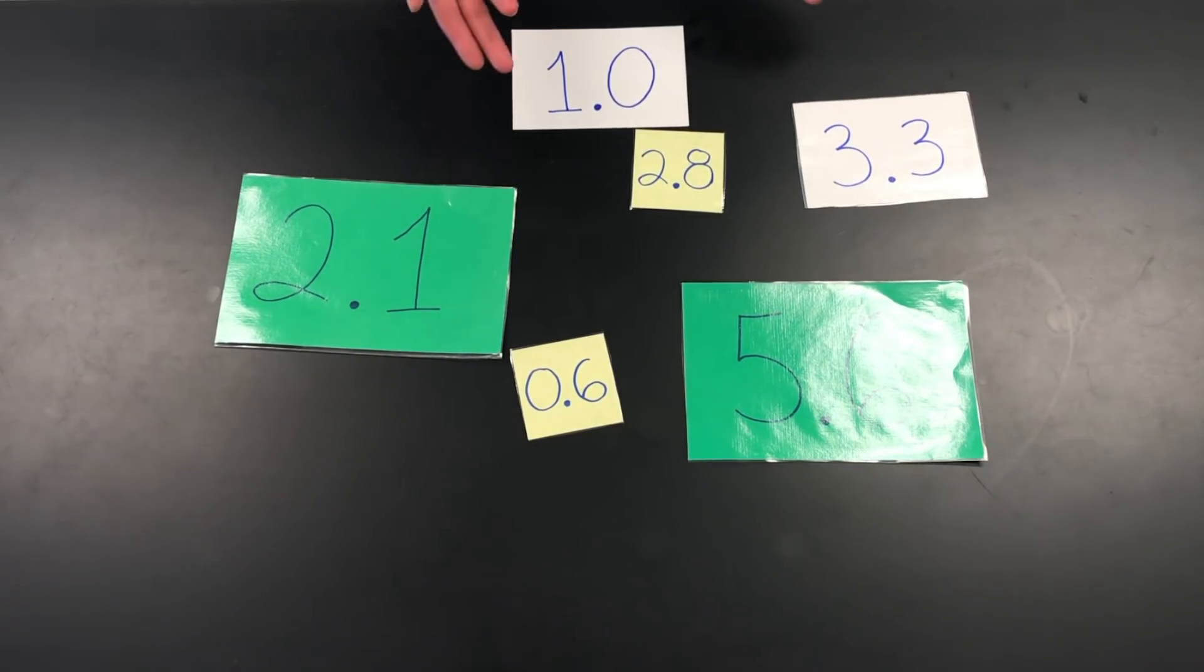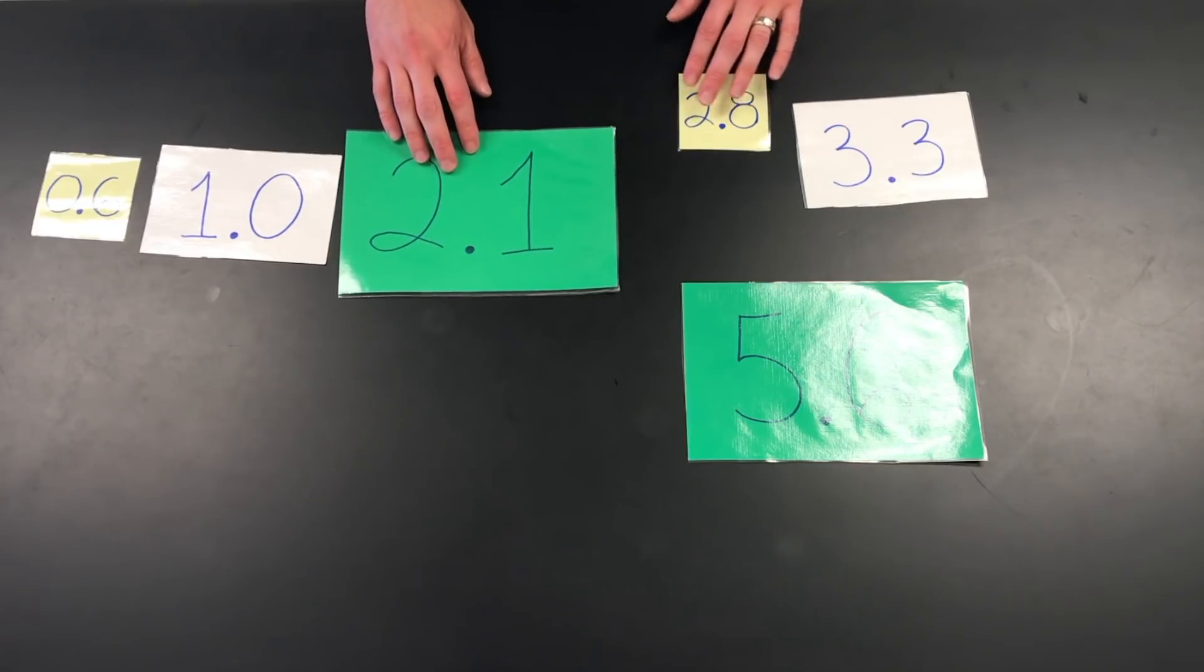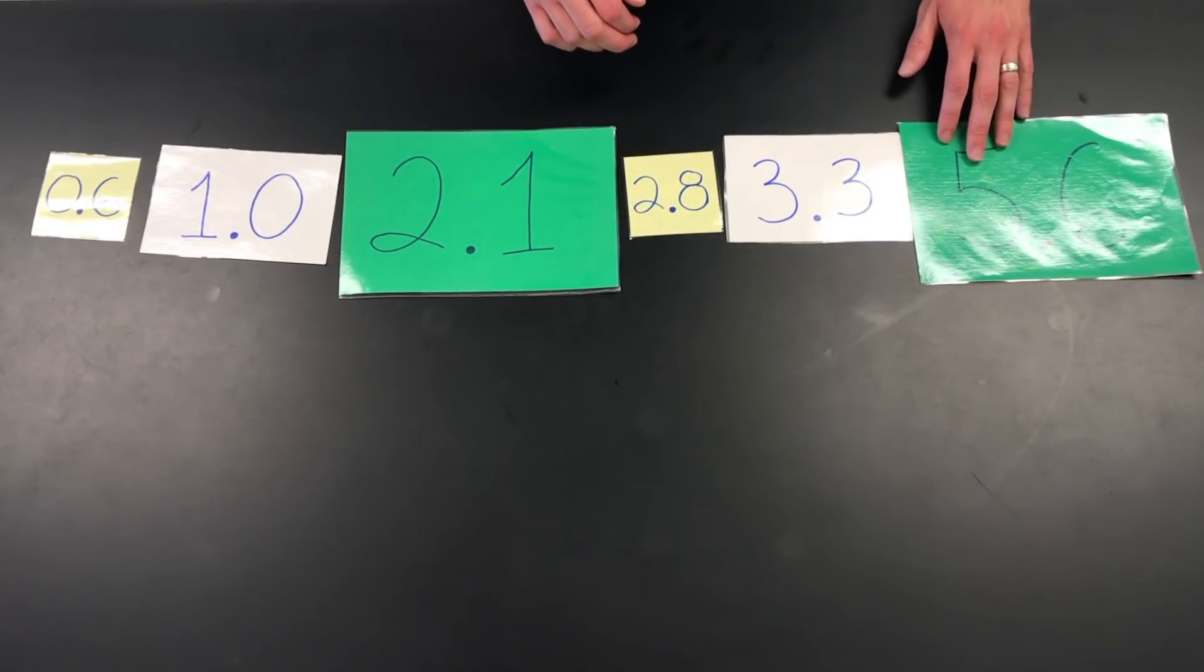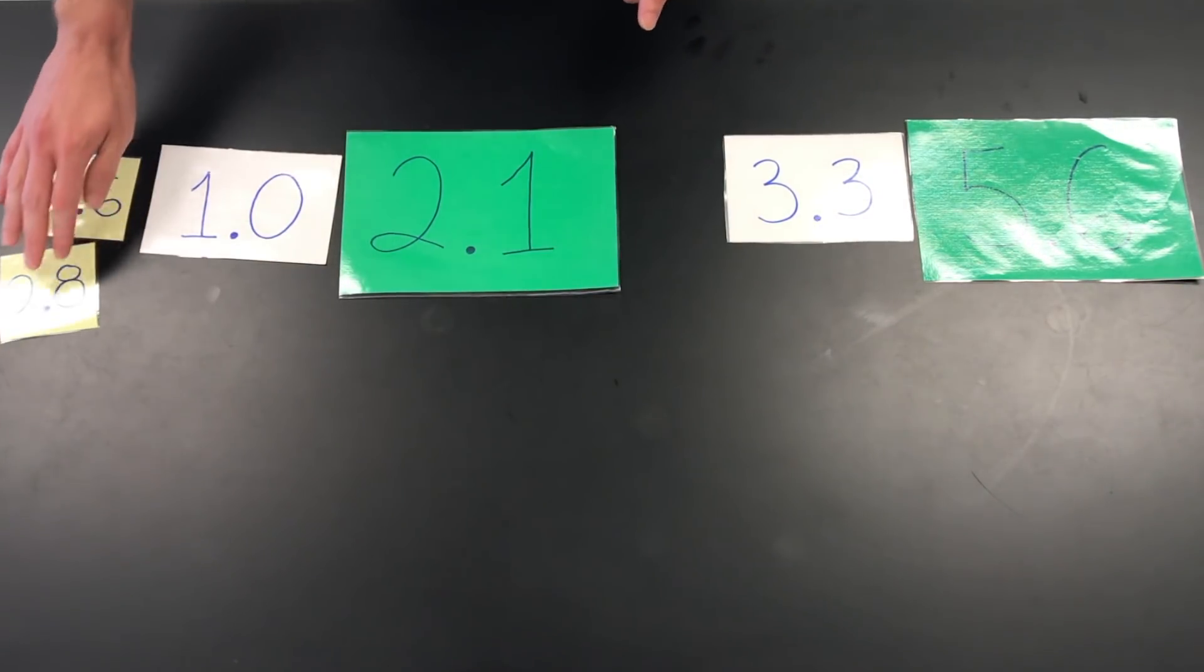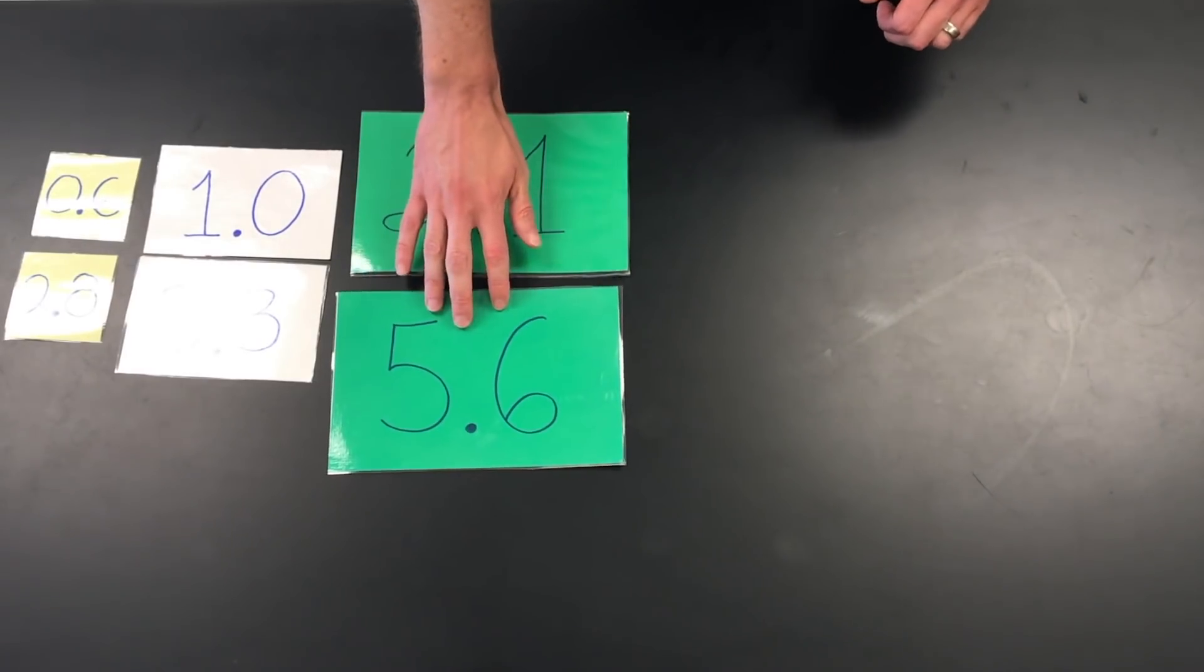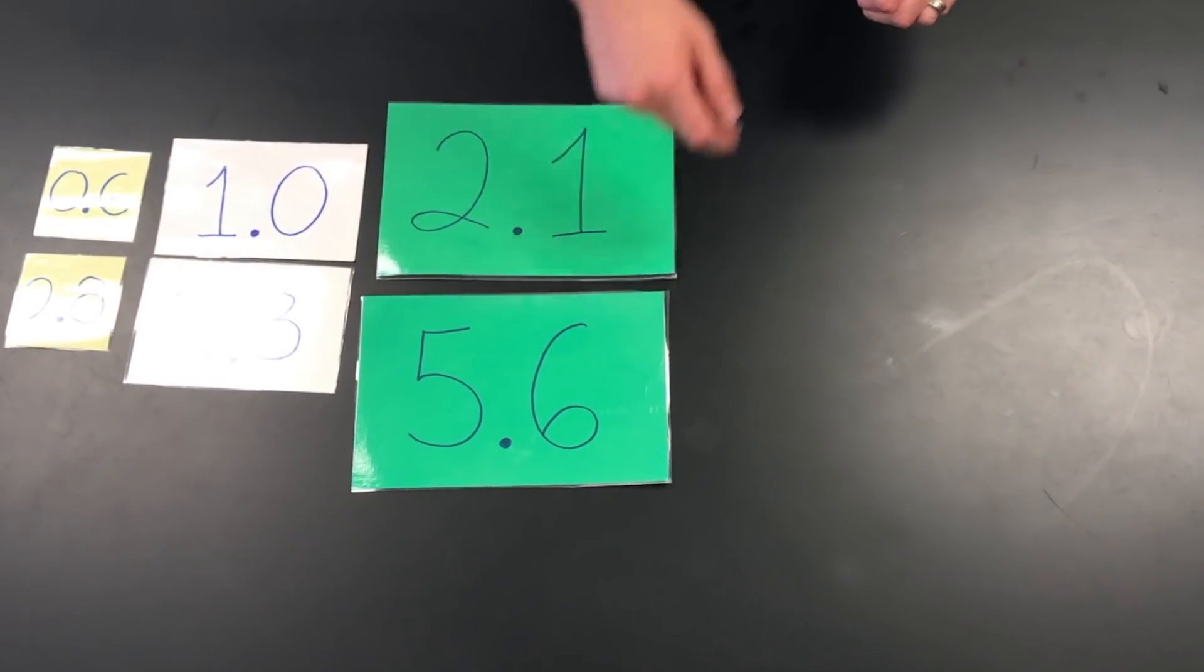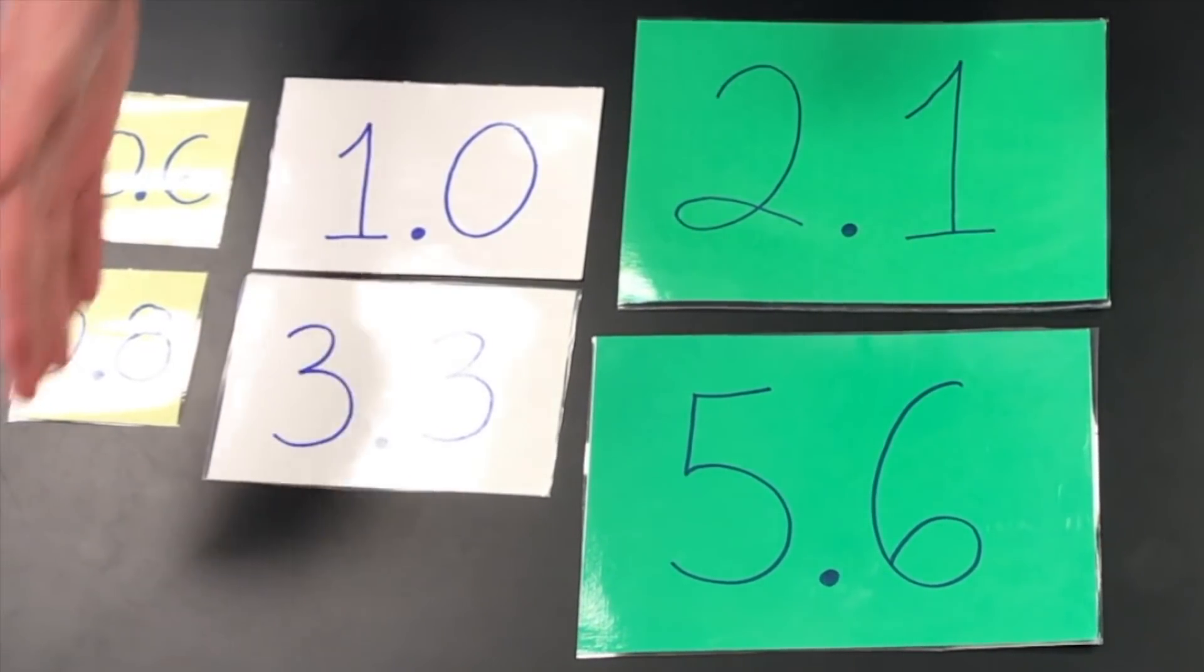Let's say we had a random assortment of numbered cards and I wanted to organize them. The first thing I think of doing is putting them in increasing numerical order. So I'm going to start with the lowest, 0.6, then 1.0, 2.1, 2.8, 3.3, 5.6. This is much like the way that Mendeleev ordered elements in terms of increasing atomic mass. Now, I want to add an extra level of organization. I notice that some of these cards look similar to one another. So I can continue going in numerical order, but now I can make a new column with the yellow post-it notes together, another column with the white index cards, and a last column with the large green index cards. So I'm still going in increasing numerical order, but now I have similar cards in the same columns. This is much like the way Mendeleev put elements with similar properties in the same groups.